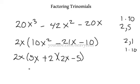5x times 2x is 10x squared. 5x times the minus 5 here is going to be minus 25x plus 4x, then minus 10.